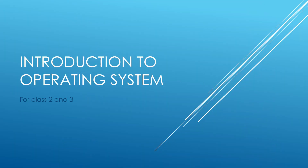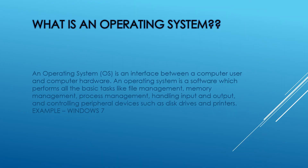Today we will study about operating systems. An operating system is an interface between the computer user and the computer hardware. It is a software which performs all the basic operations like managing files, managing memory, managing processes, and also handles the input and output. It also controls all the extra devices connected to the computer like disk drives, printers, etc.